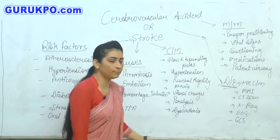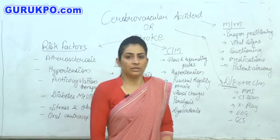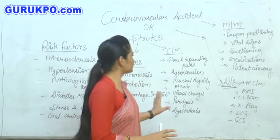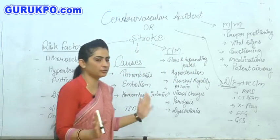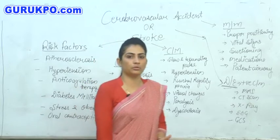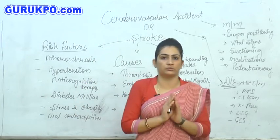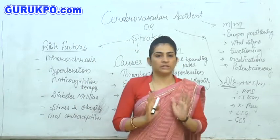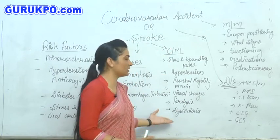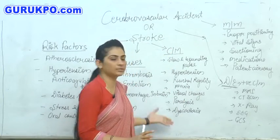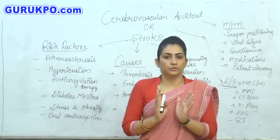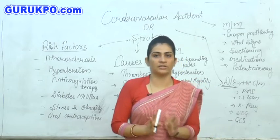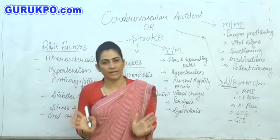Next one is dysarthria, which leads to severe speech difficulties. So how could we diagnose stroke or cerebrovascular accident? First of all, we would look for all the clinical signs — if these signs are positive in the patient, it is a positive indication of stroke or cerebrovascular accident.